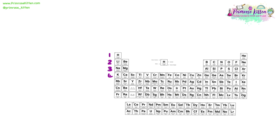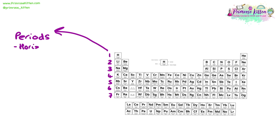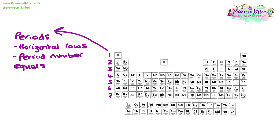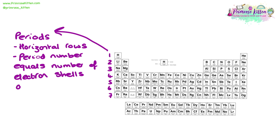If we add numbers down the side of the periodic table, this indicates the horizontal rows, and these are called periods. Periods are the horizontal rows indicated by the period number, which tells us which row the element would be found on. The period number also tells us how many electron shells an element has — importantly, not how many electrons, but how many shells.